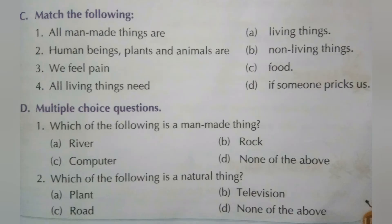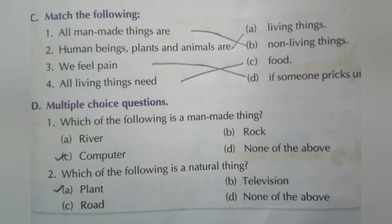Next, matching exercise. All man-made things are non-living things — match with B. Human beings, plants and animals are living things — match with A. We feel pain if someone breaks us — match with D. All living things need food to survive — match with C.